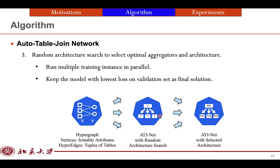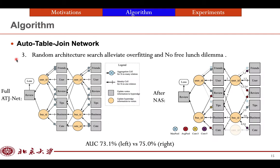We notice that the simple random architecture search can alleviate overfitting and no-free-lunch dilemma. The left result is the full two-layer ATJNet, which gives the AUC score 73 versus the right is the model after architecture search, which gives the AUC score 75. And we can see that many paths are pruned and optimal aggregators are selected.